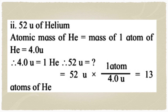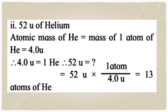For the second part — 52 U of helium: the atomic mass of helium = mass of one atom = 4.0 U, meaning one atom contains 4.0 U. Therefore 52 U contains 52 ÷ 4.0 = 13 atoms. So 52 U of helium contains 13 atoms of helium.